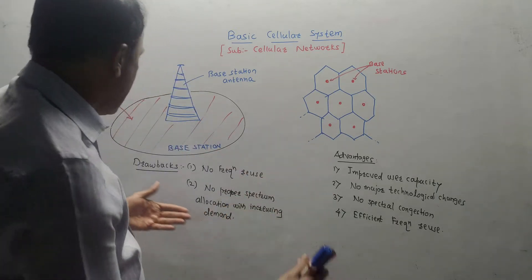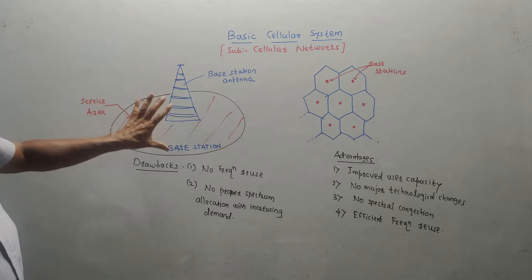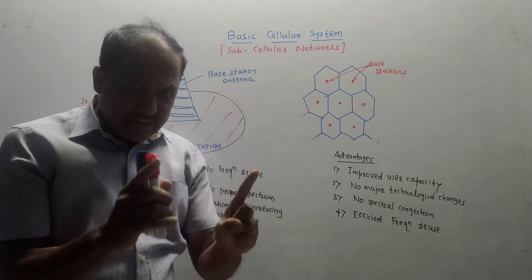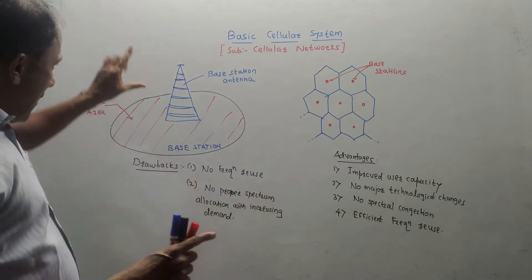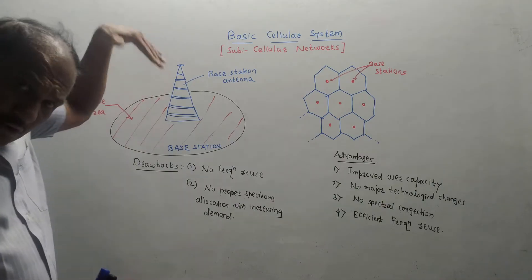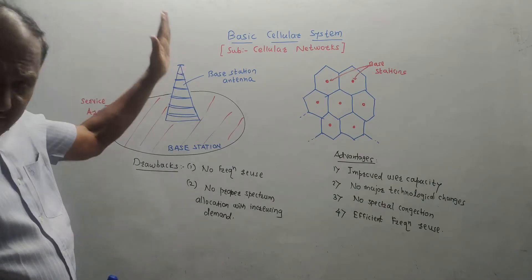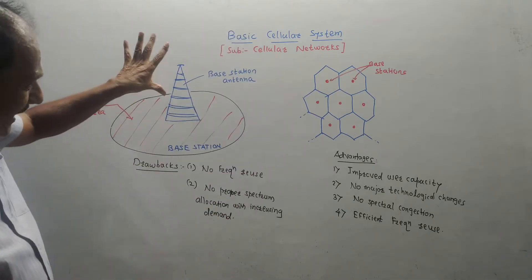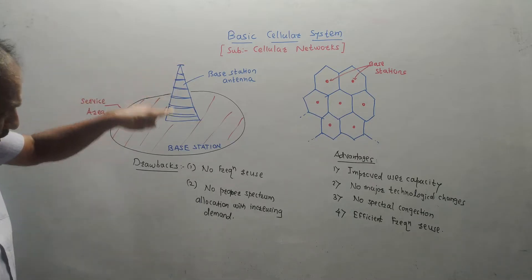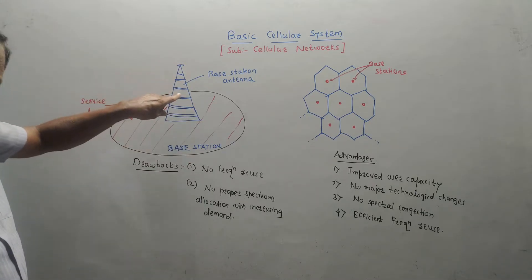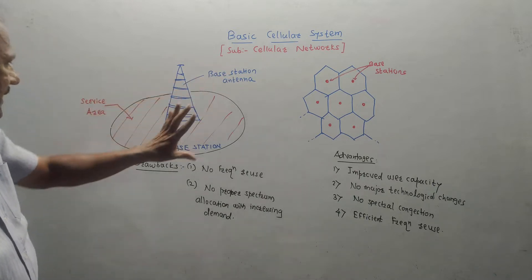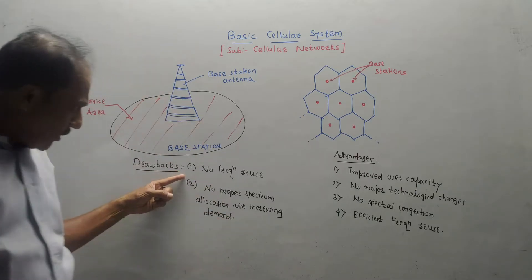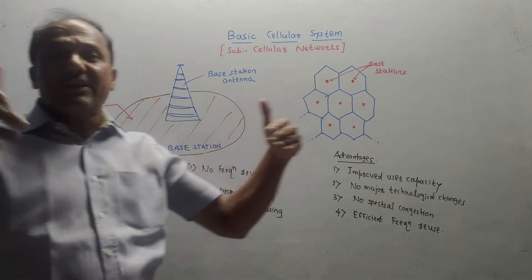Before this cellular network, we were using a large tower for a large area — for an entire city, a single tower was in use. On this tall tower, one antenna was used which was capable of covering the entire region. That was the earlier technology. This is called a base station, and this particular antenna is the base station antenna. This was the largest service area.